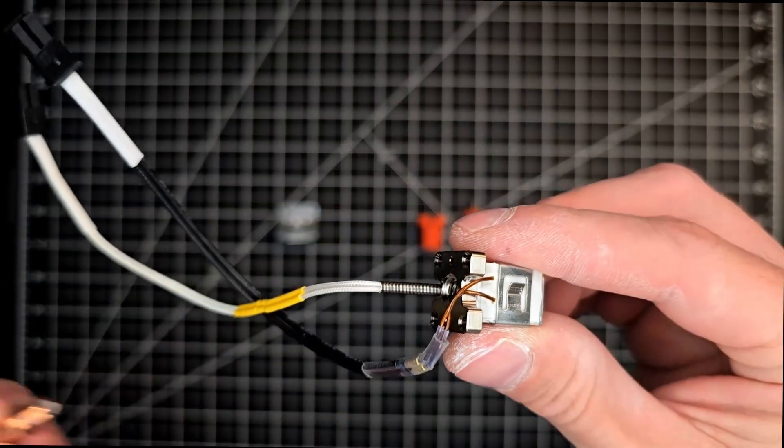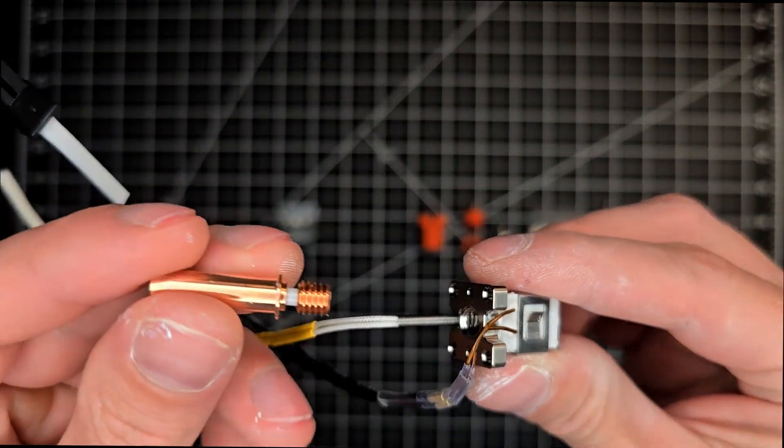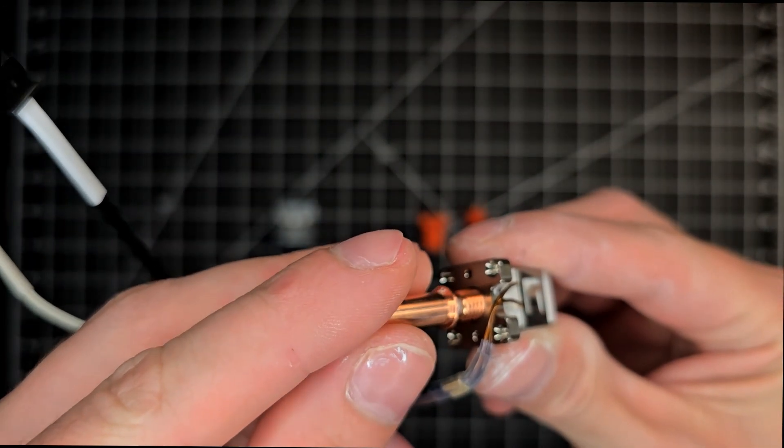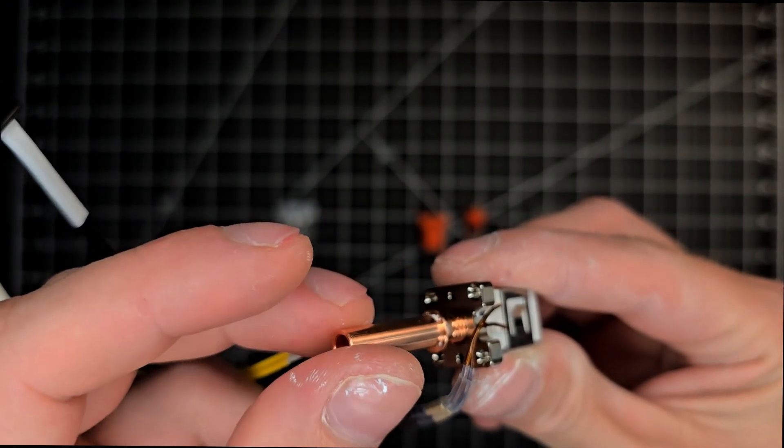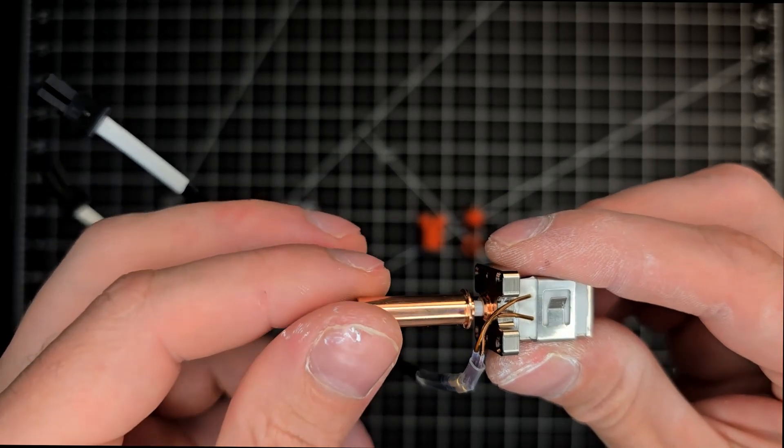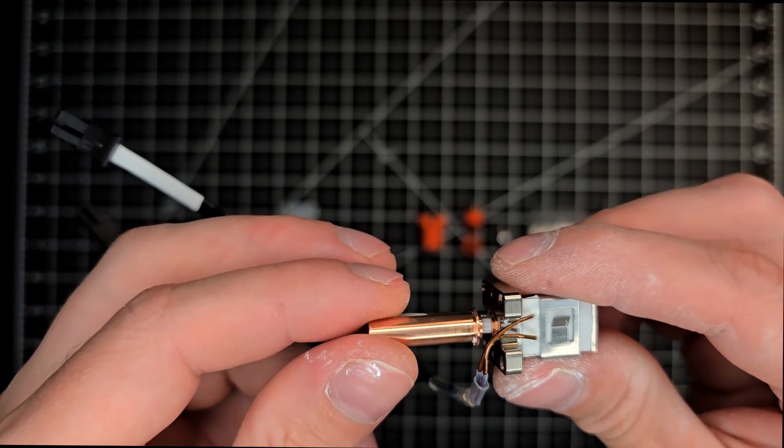Next, we're going to grab the heat brake to thread into the top portion of the block. You're going to want to seat this almost flush, leaving about 1mm distance between the highest most portion of the thread and the top surface of the block itself.